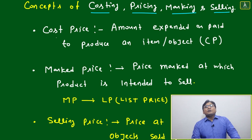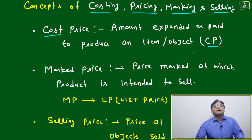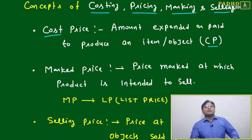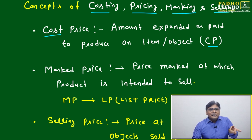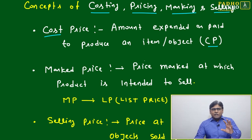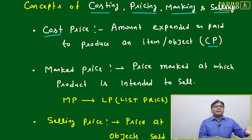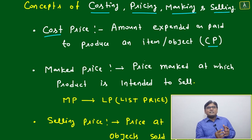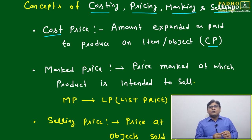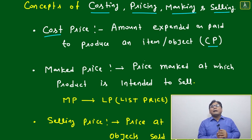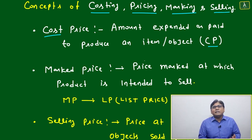First we'll look at costing. Based on the costing, we will decide the cost price, that is called CP. Wherever it is written CP, it means cost price — the amount expended or paid to produce an item or object. Two things can happen: either you are producing some item and after production you are selling it, then the amount invested for production is the cost price, or you are just working like a wholesaler or middleman.